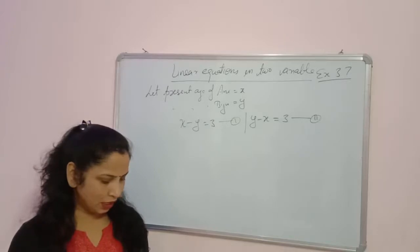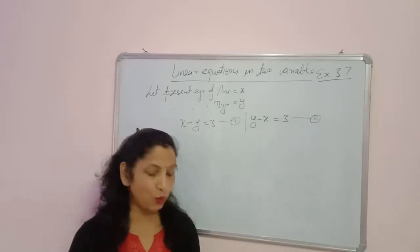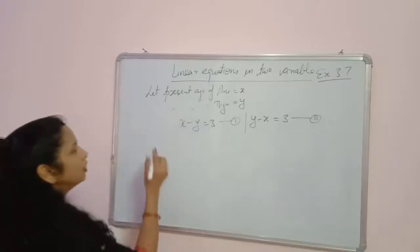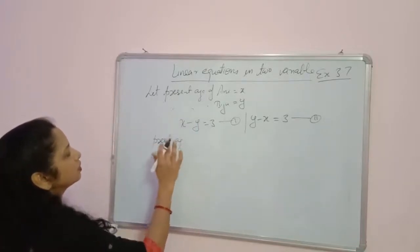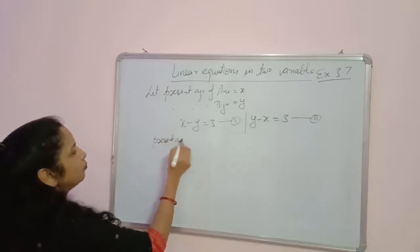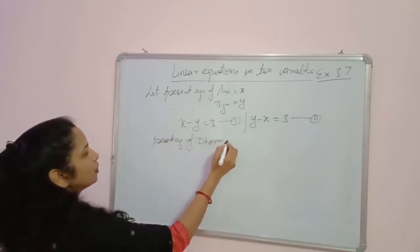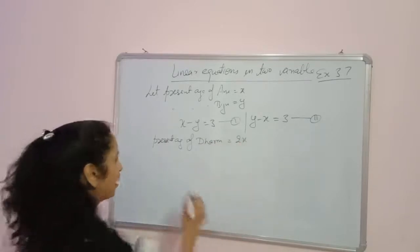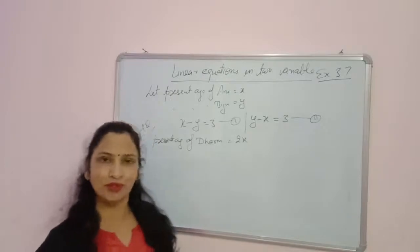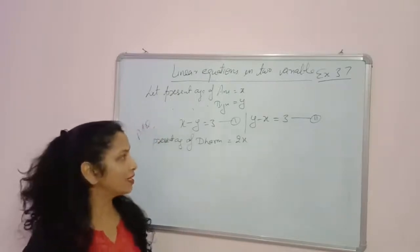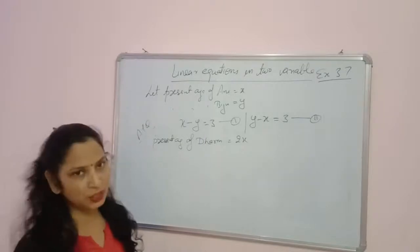The next condition: Ani's father Dharam is twice as old as Ani. So the present age of Dharam is equal to 2x, because Dharam's age is twice that of Ani.